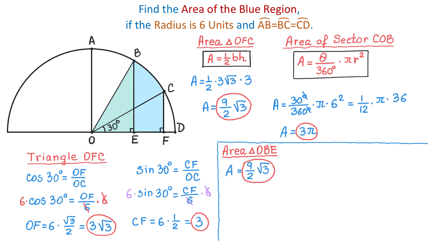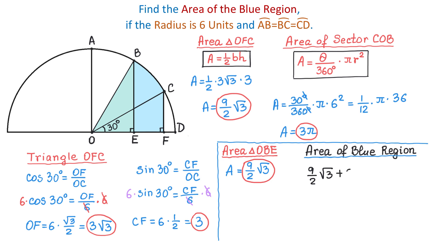To find the area of the blue region, we add the two areas together and subtract the area of triangle OBE: 9 over 2 square root of 3 plus 3 pi minus 9 over 2 square root of 3. The two triangle area terms cancel, and the area of the blue region is 3 pi.